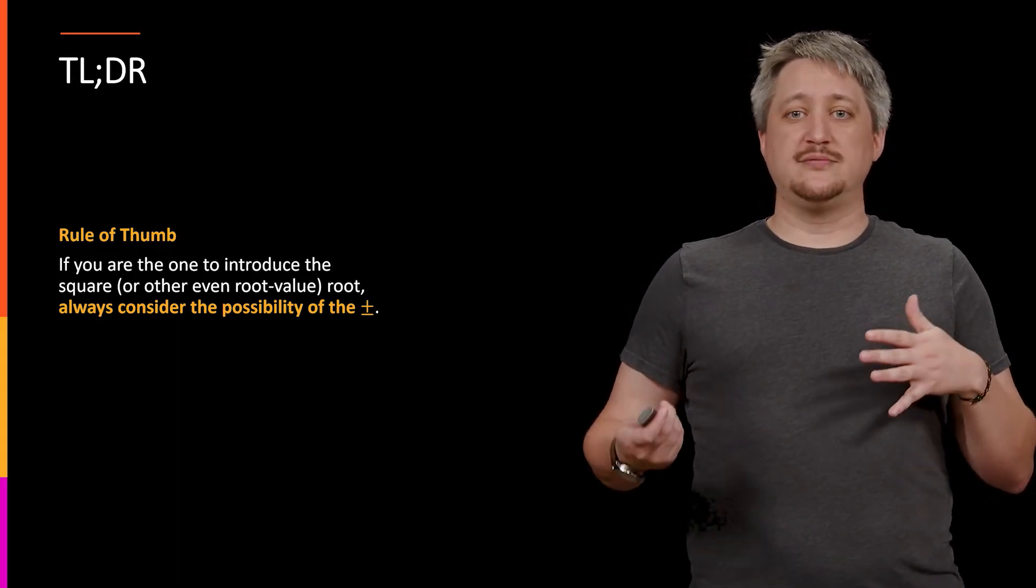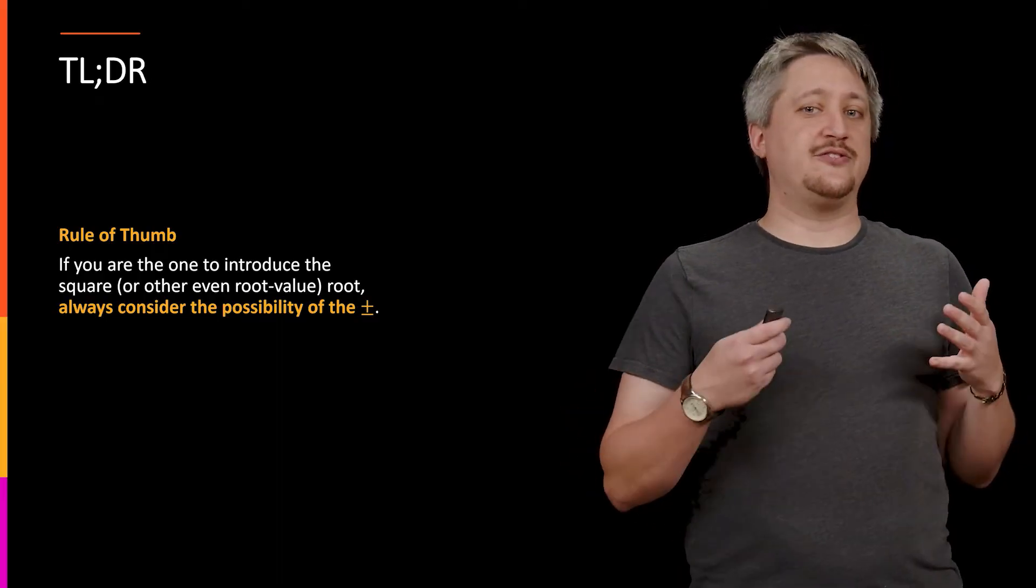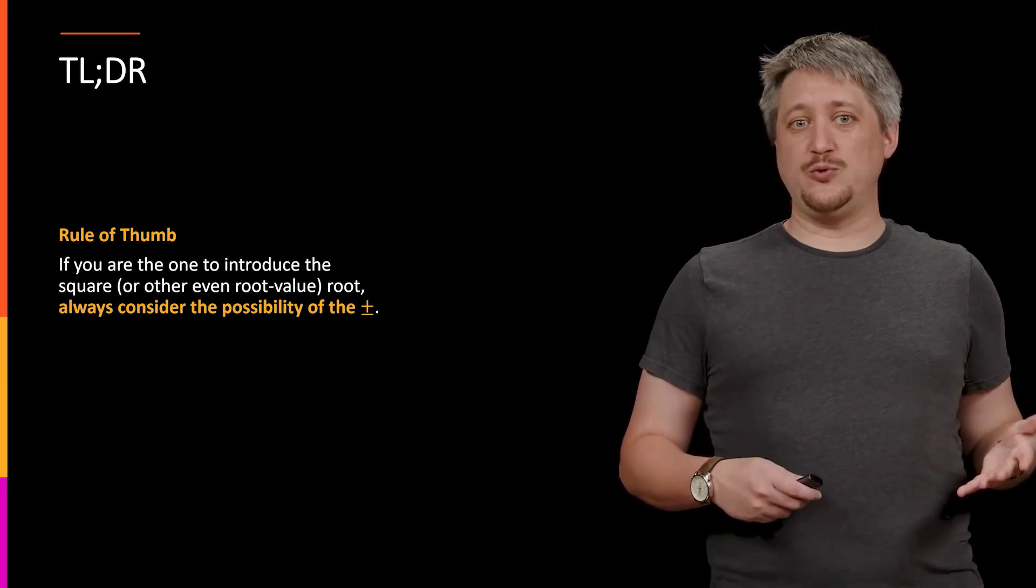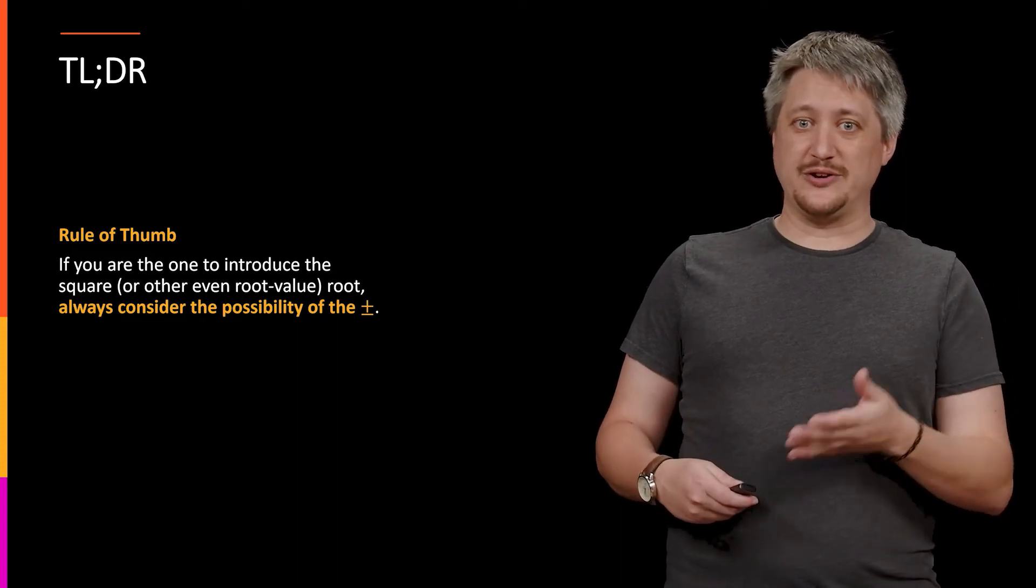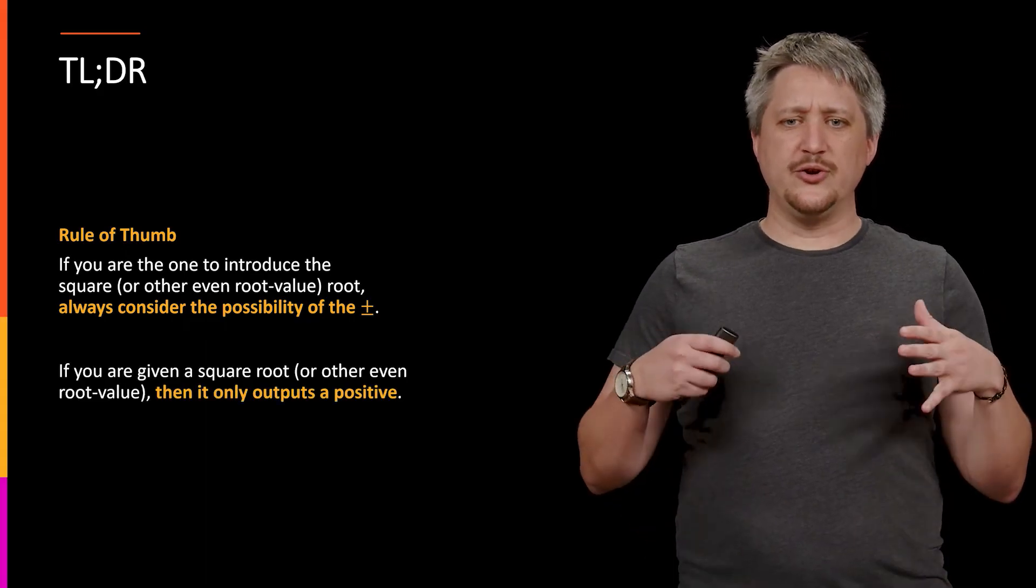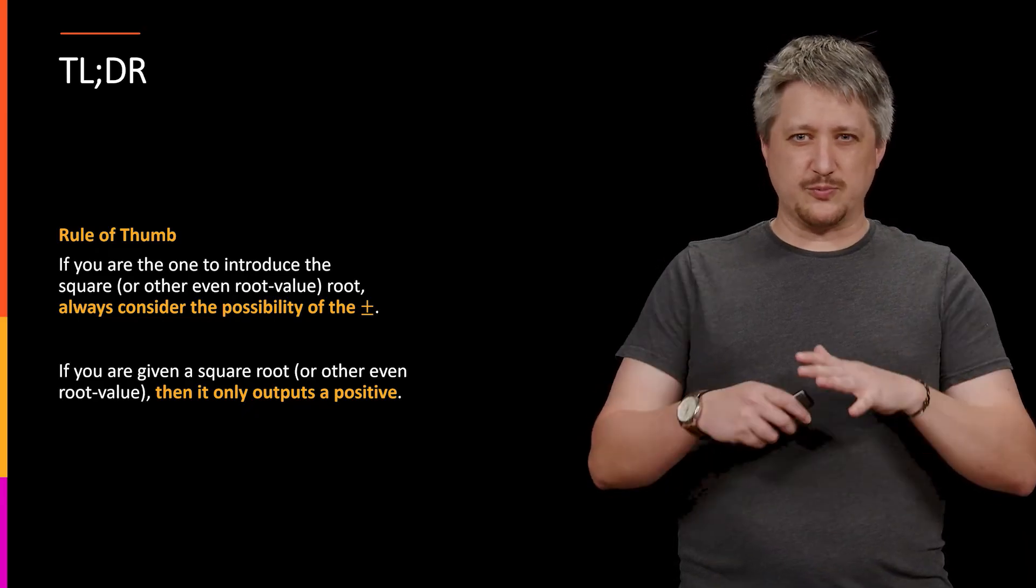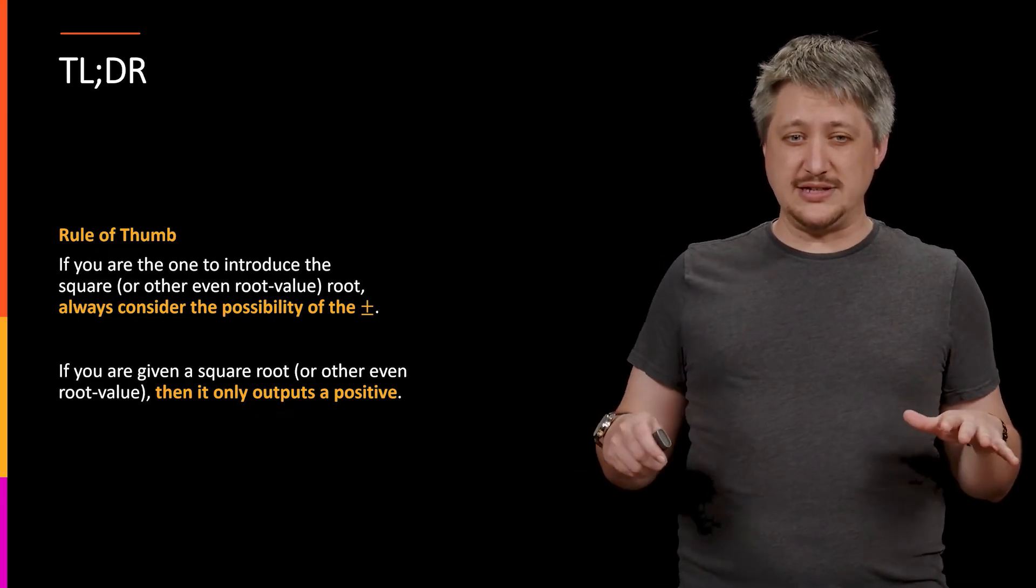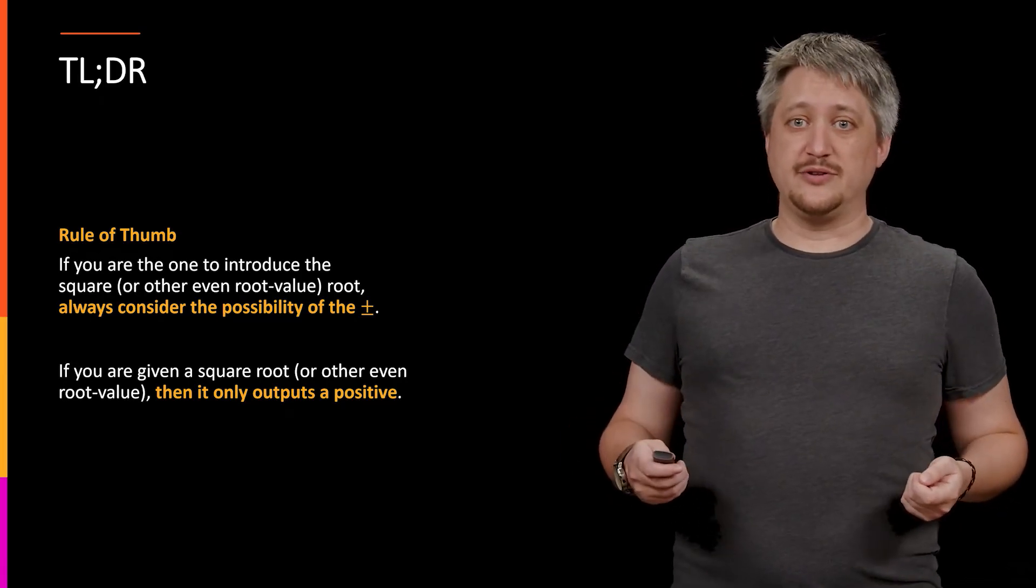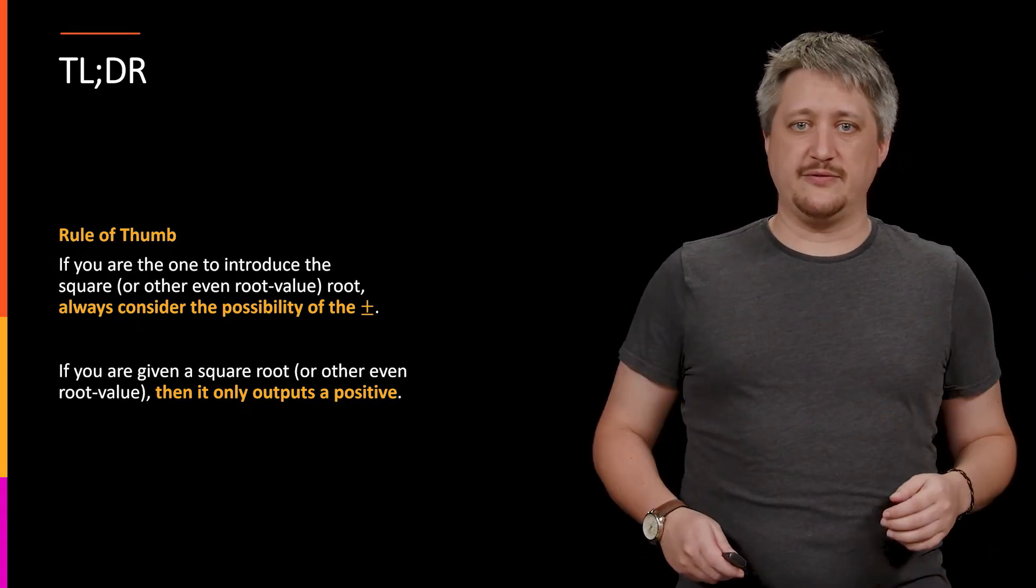So rule of thumb: if you're the one to introduce the square root during the solution process, as opposed to someone handing it to you as the statement of the problem, if you introduce the square root, that's when you want the plus or minus. Whereas if you are just given the square root, if I say what is the square root of four, that's always going to be for our sake the positive one, so the square root of four is always two. But if you introduce the square root, like you have x² = 4 and you square root both sides, then you get plus or minus two.